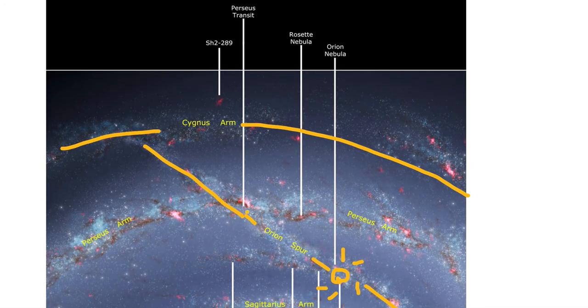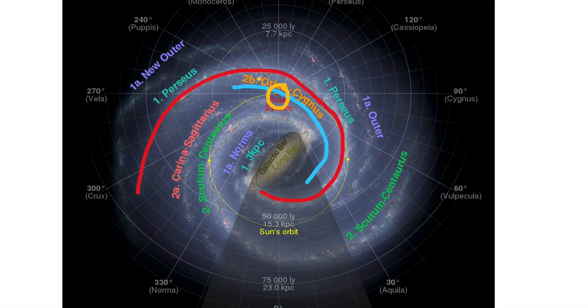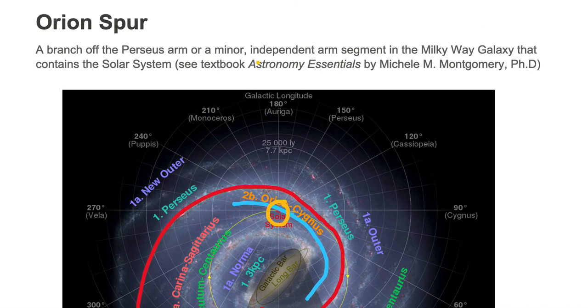So the Orion Spur is off the Cygnus minor arm and the two of them, the Orion Cygnus, is a minor arm. It's an independent segment or it could be a branch off the Perseus arm.